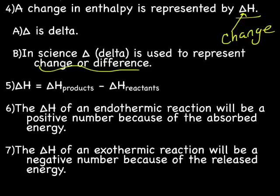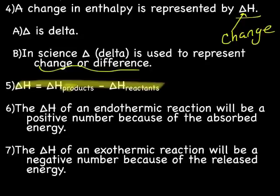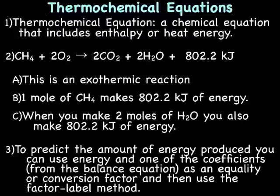The changes in enthalpy is represented by delta H. That triangle in any circumstance means change. The change in enthalpy equals the change in enthalpy of the products minus the change in enthalpy of the reactants. The delta H of an endothermic reaction will be a positive number because the energy of the product molecules is greater. The delta H of an exothermic reaction will be a negative number because you're releasing energy.